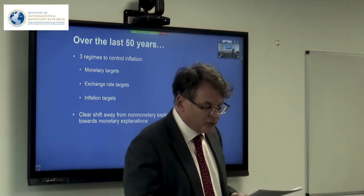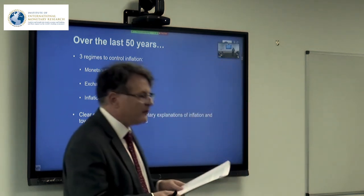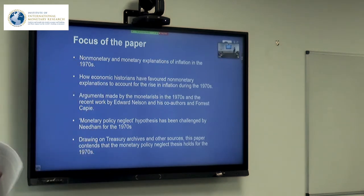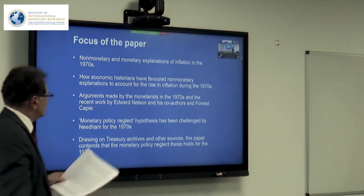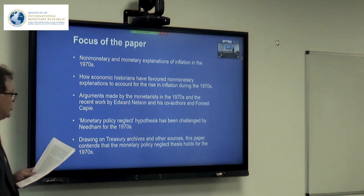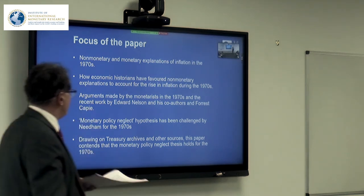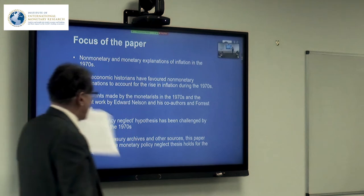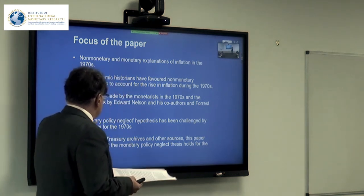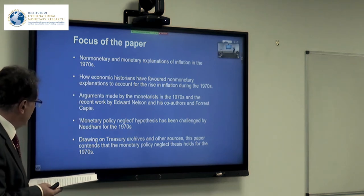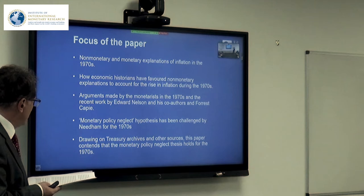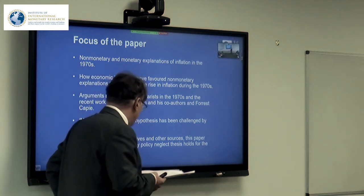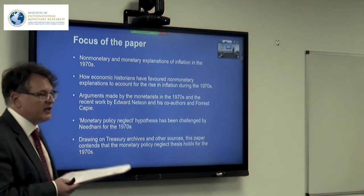However, there are many different possible reasons for monetary growth, including gold discoveries, financing government spending, and financing of private spending. The focus of this paper is on the non-monetary and monetary explanations of inflation in the 1970s — first looking at how economic historians have favoured non-monetary explanations to account for the rise in inflation, and then turning to the arguments made by the monetarists.